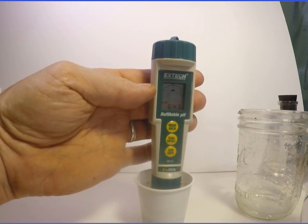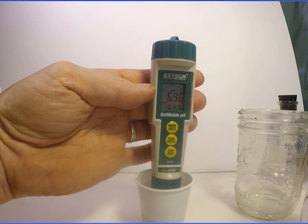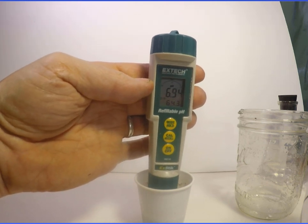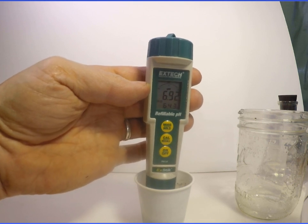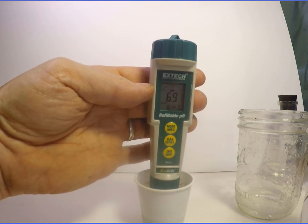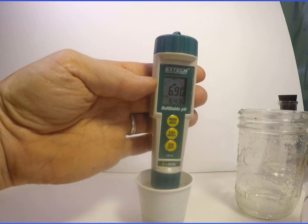You can move the probe gently as you measure, or alternate moving the probe and holding it still to read it. Some pH meters will stop the blinking numbers on the display to indicate when the reading is stable.